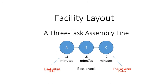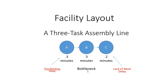Whenever the person doing task B finishes their work, they hand it off to the person doing step C. Step C is going to finish their work in 0.2 minutes, put it in the finished pile, and then they have to wait 0.3 minutes before they can get the next item. We call that a lack of work delay — they hand it off and just sit there and wait. So we need to identify where your bottleneck is, identify steps that may be flow blocked, and identify those steps waiting for work due to a lack of work delay.